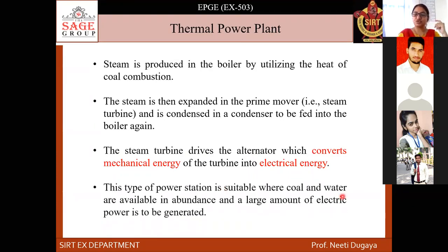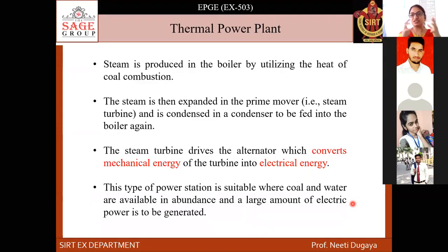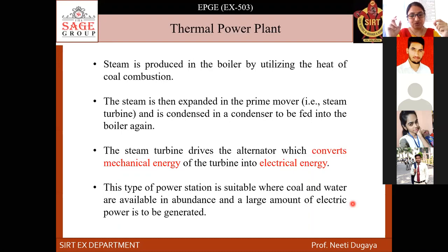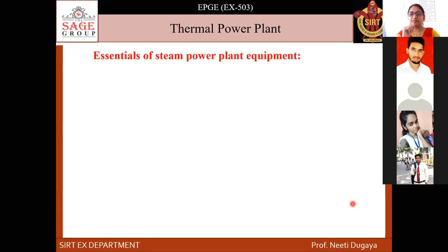This type of power station is suitable where coal and water are available in abundance and a large amount of electrical power is to be generated. Coal is the primary fuel and large amounts of water are required for the boiler and condensation process. For site selection, it is important to choose a location near a coal mine to reduce transportation costs, and where water is also available in abundance.